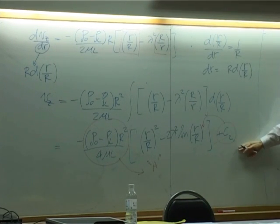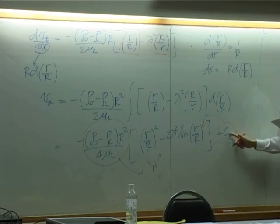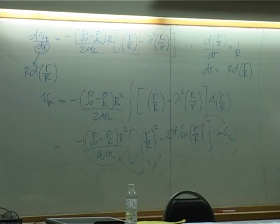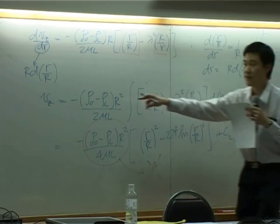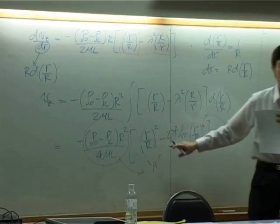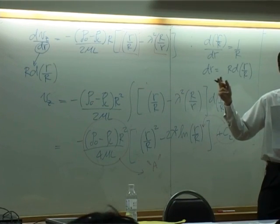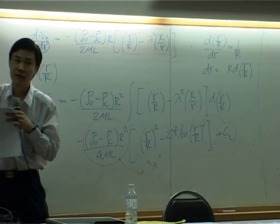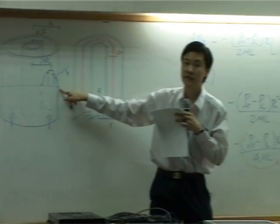Now, how many unknowns do we have in this equation? Two. What are they? C2 and lambda. So, how many boundary conditions do we need? Two. What are they? Do we have two boundary conditions? Yes. Because these two boundary conditions supposed to give you velocity at certain position r. Do we have it? Yes. One is at the surface of inner tube. The other one is at the surface of outer tube.